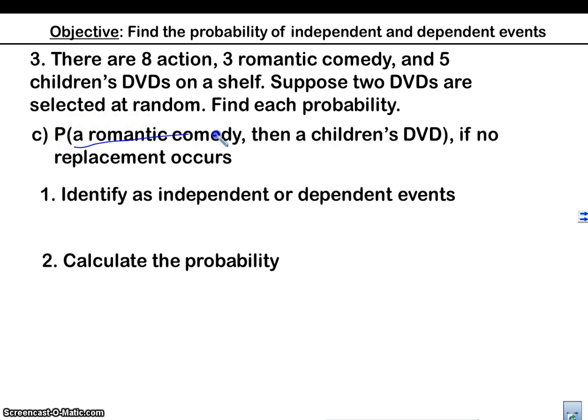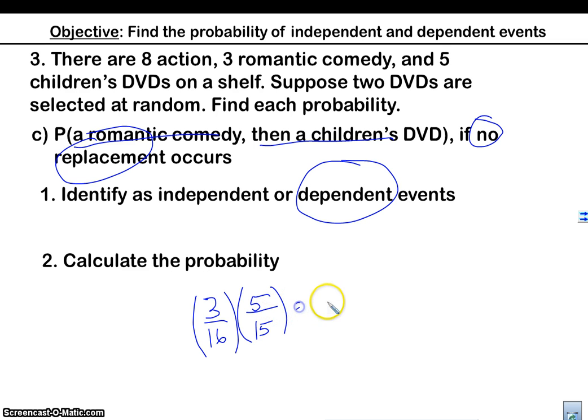Let's say we want a romantic comedy and then a children's DVD, if no replacement occurs. So again, no replacement is dependent. The romantic comedy is going to be three out of 16. Now we did not take any children's out, so we still have five children's to choose from, but we only have 15 left here. So that's, we can do some really quick math here. Three-sixteenths times five-fifteenths equals one-sixteenth. That's an easy fraction to deal with.